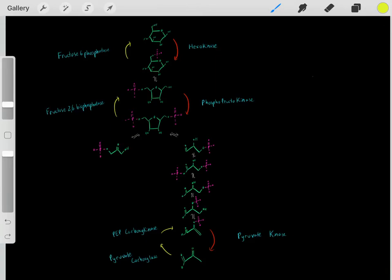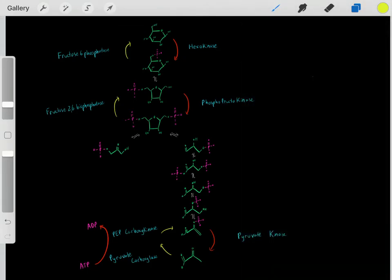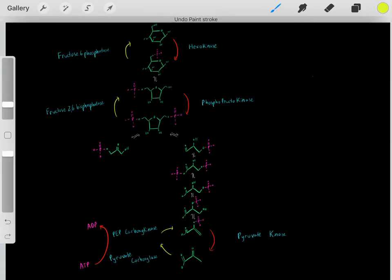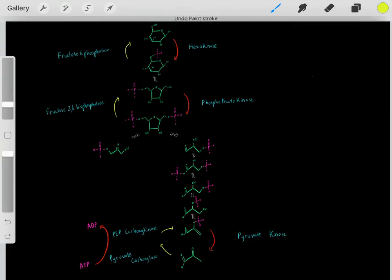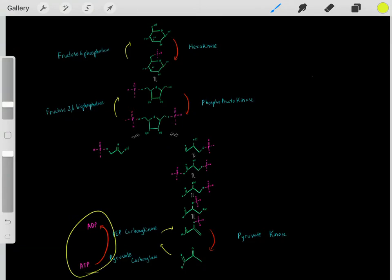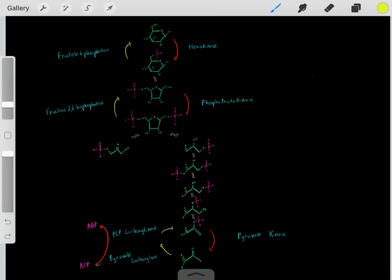How do we make going in this direction favorable when it was previously irreversible? We hydrolyze ATP molecules. In these bypass steps, we take ATP and hydrolyze it to ADP. We know this is very thermodynamically favorable, and we use that favorability to pull forward these reactions.